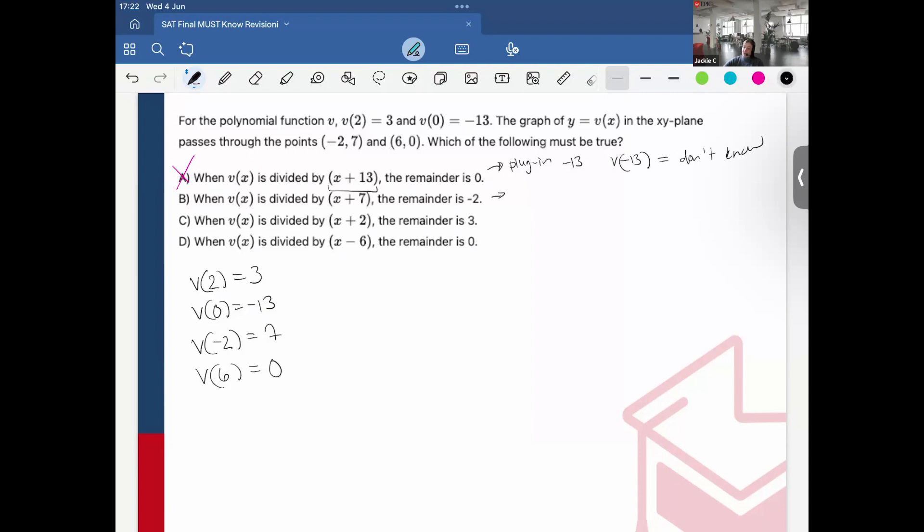Here, so I have it's divided by x plus 7. So what I would do, if I were to place it in the function, is plug in negative 7. And that negative 7 will give me the output or the remainder. But I also don't know what negative 7 is. So we can discard that.